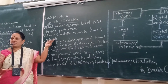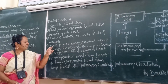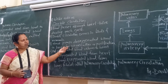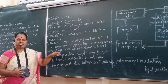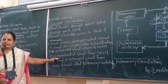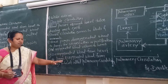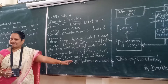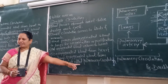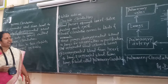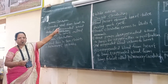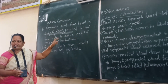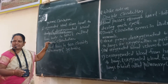Double circulation occurs in birds and mammals. The heart sends deoxygenated blood to the lungs for oxygenation, and oxygenated blood returns back to the heart. Deoxygenated blood from the heart to the lungs and oxygenated blood from the lungs to the heart — that circuit is called pulmonary circulation. The second circuit, oxygenated blood from the heart to the body and deoxygenated blood from the body to the heart, is called systemic circulation.